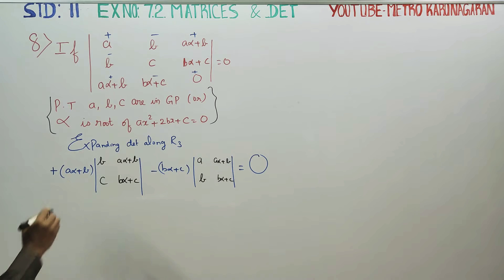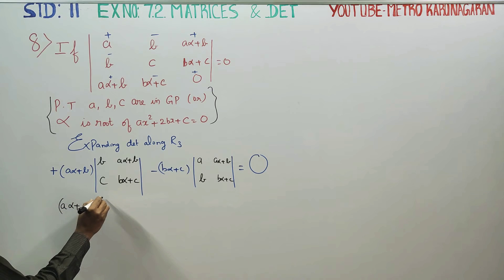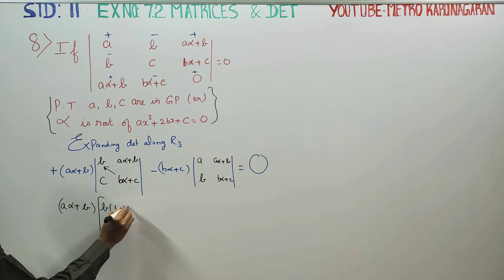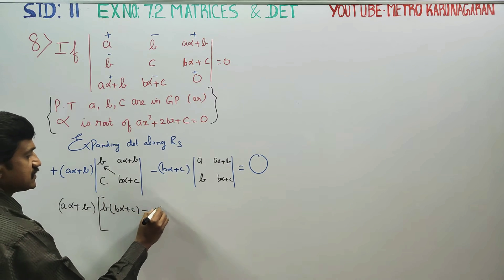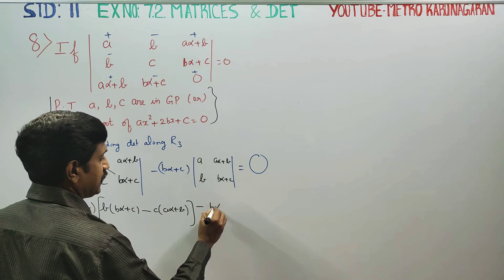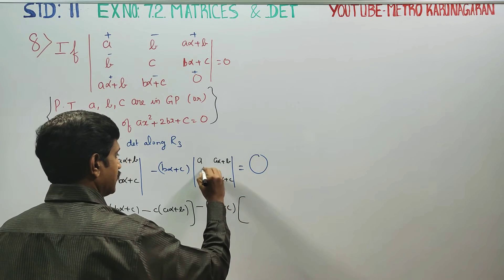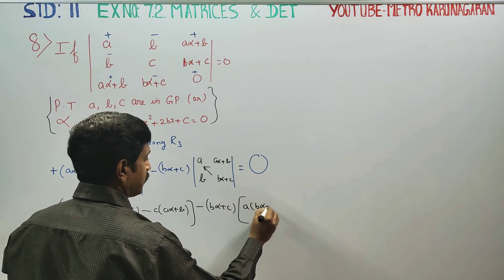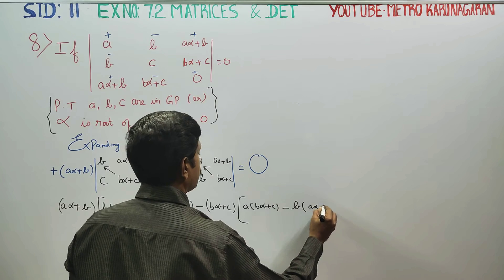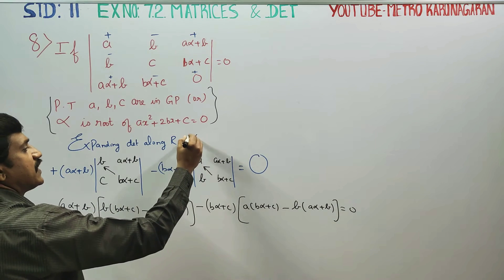Now we can expand this. (a·alpha + b) is already ready. Opening the right-hand side minus left-hand side: B into (b·alpha + c) minus C into (a·alpha + b), minus (b·alpha + c). Then A into (b·alpha + c) minus B into (a·alpha + b). This is the R3 expansion — a very fast technique.